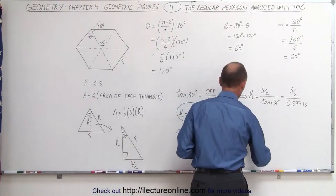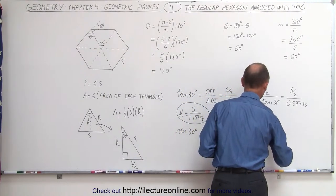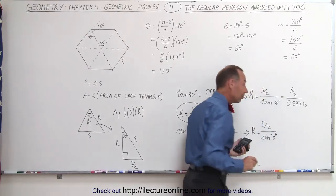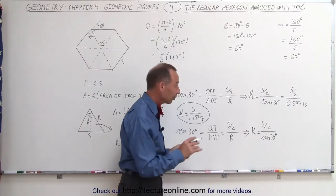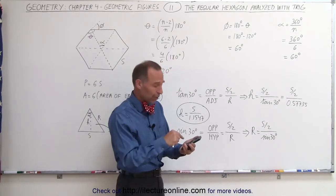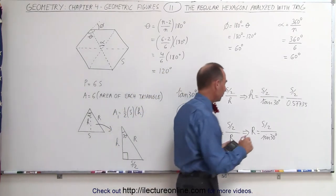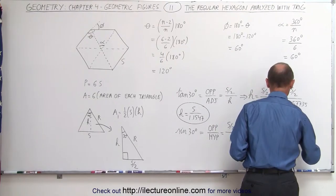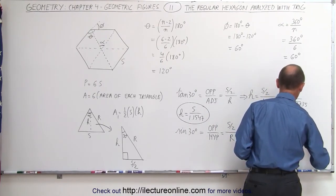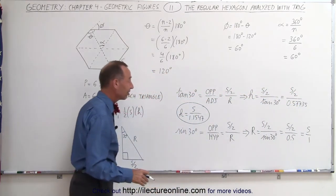Solving for R, we can say that R equals (S/2) divided by the sine of 30 degrees. The sine of 30 degrees is equal to 1/2 or 0.5. So this equals (S/2) divided by 0.5, which can be written as S divided by 1. In other words, R is equal to S.